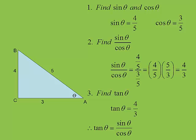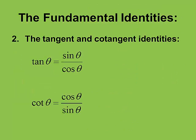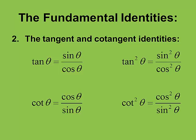Therefore, tangent theta is sine over cosine. That is one of the basic identities in trigonometry — it's called the tangent identity. The cotangent identity is just the reciprocal of that, where cotangent is cosine over sine. Squaring both sides gives tangent squared equal to sine squared over cosine squared, and cotangent squared equal to cosine squared over sine squared.